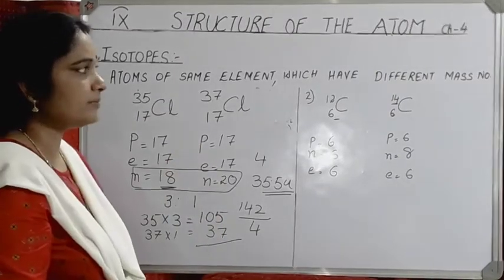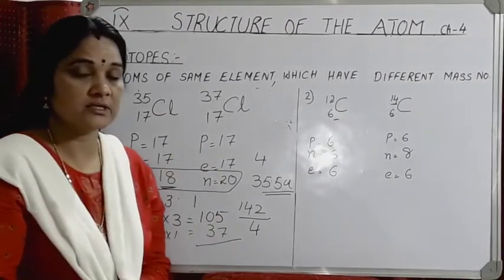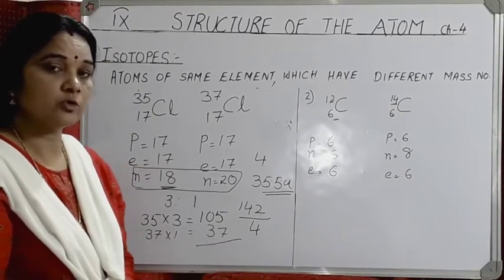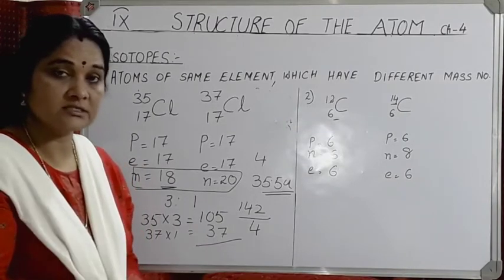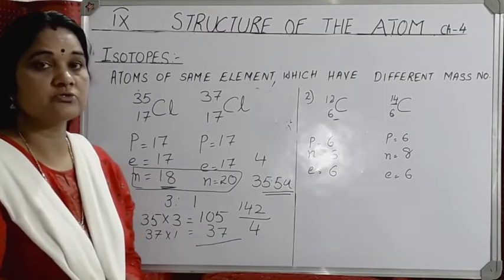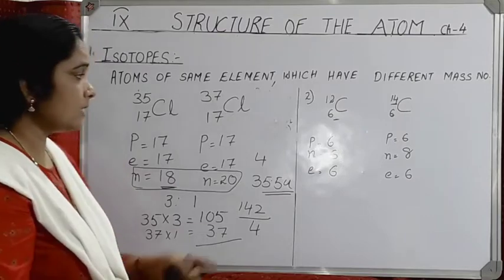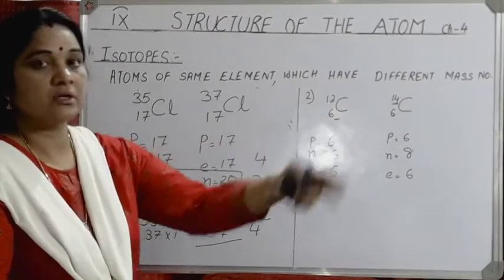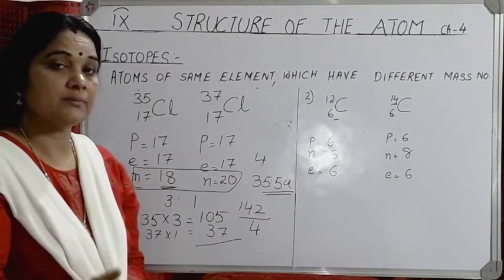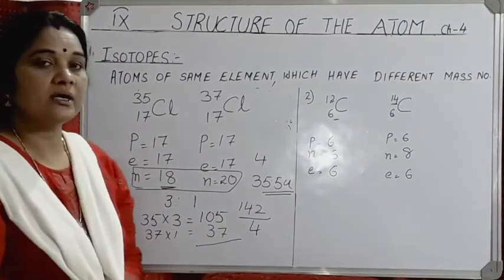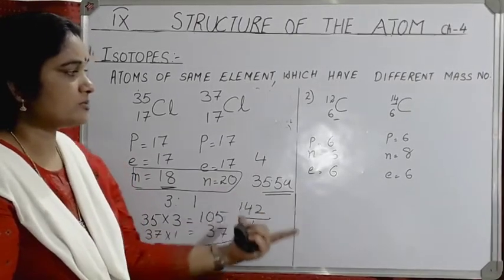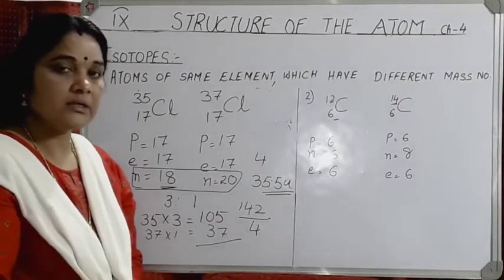Isotopes have various important applications. One isotope of cobalt is used in treating cancer. Certain isotopes of uranium (a radioactive element) are used in nuclear reactors. Carbon-14 is used for finding the age of fossils — this is known as carbon dating. Isotopes of different elements are used across many scientific and medical applications.